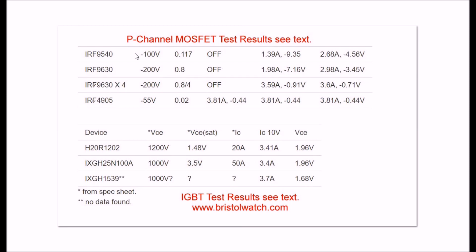I didn't have many of these, I junked them. Now let's go to the IRF 9630. This is rated for 200 volts. It has 0.8 ohms RDS. Of course it didn't cut on at 3.3 either.